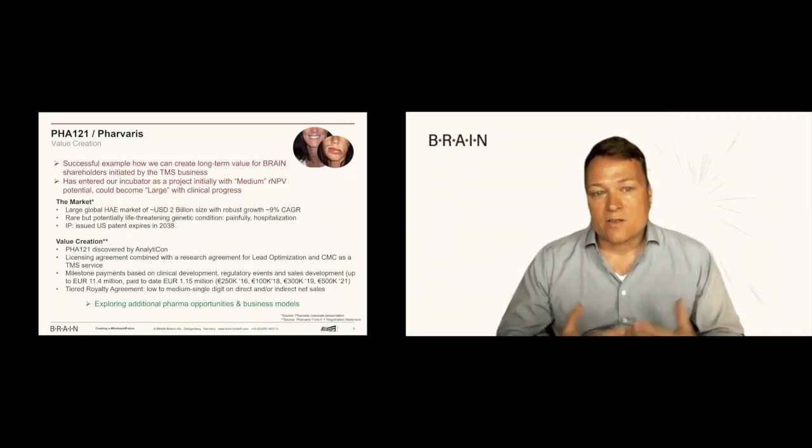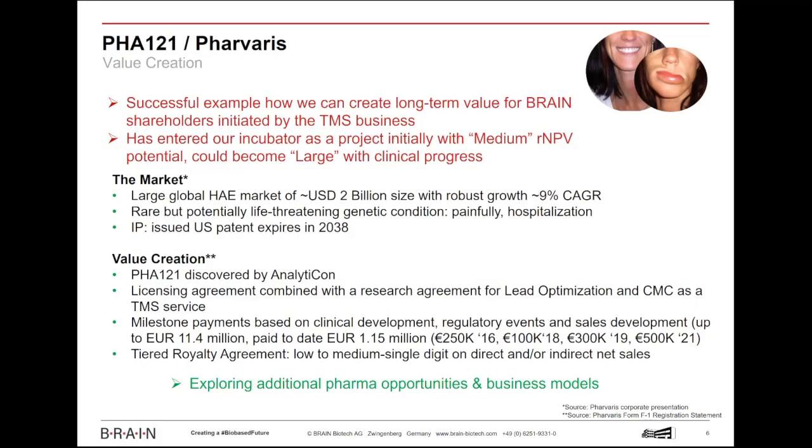I'll give you some ideas basically how big the market is. In HAE, we are talking about a 2 billion market with robust growth around 9% CAGR. Preventing hospitalization would be significant cost savings to the healthcare system, so we could realize probably a very good reimbursement for the drug. There's an issued US patent which expires in 2038, so long patent protection for the drug. We could collect at Brain, via our daughter company Analyticon, around 11.4 million in milestones if that drug comes to the market. On top of that would get royalties in the range of a low to medium single digit amount on direct and indirect sales.